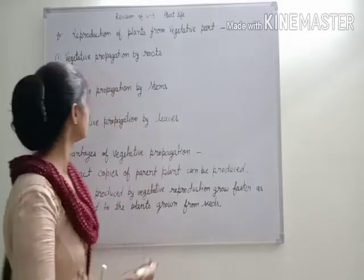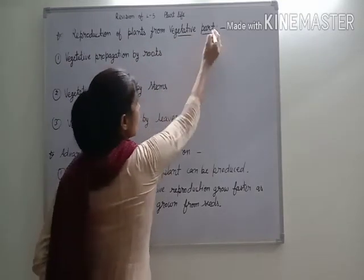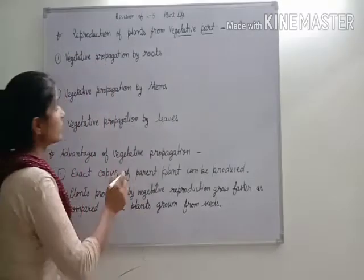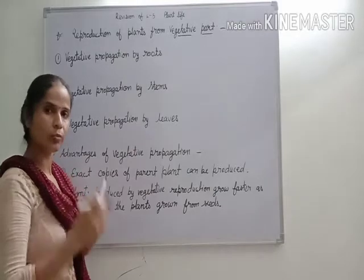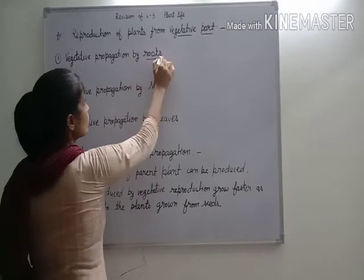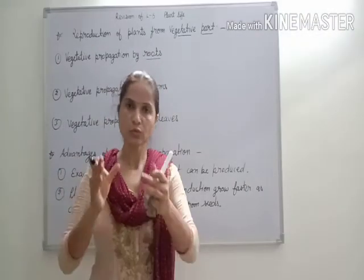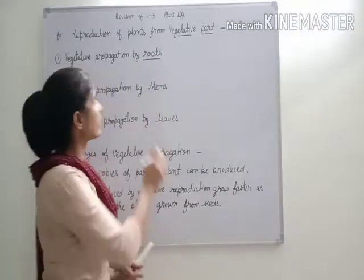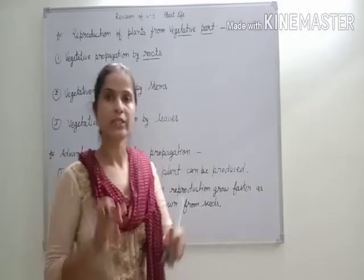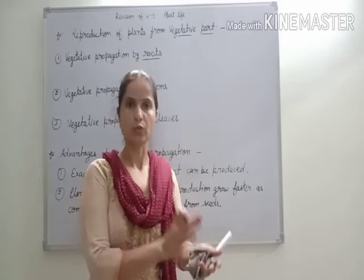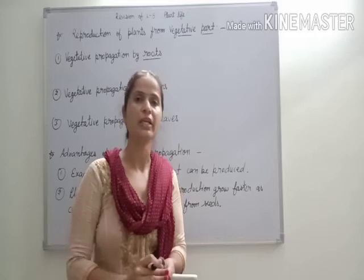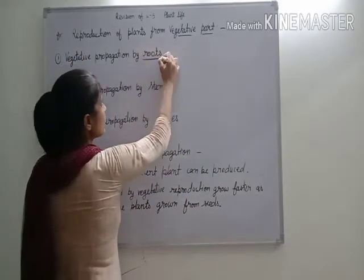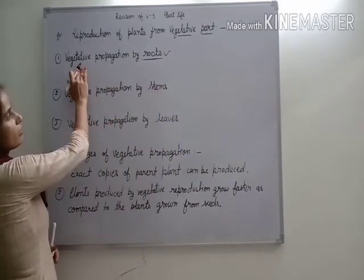Now we will discuss about reproduction of plants from vegetative part. Plants make new plants from their vegetative parts — this is called vegetative propagation. Vegetative propagation by roots — sweet potato is an example where swollen roots produce a new plant. This is called vegetative propagation by roots.